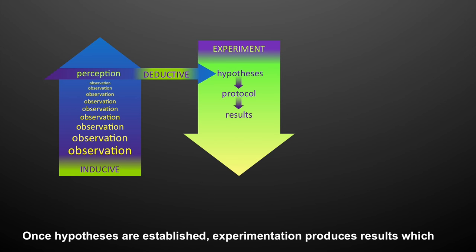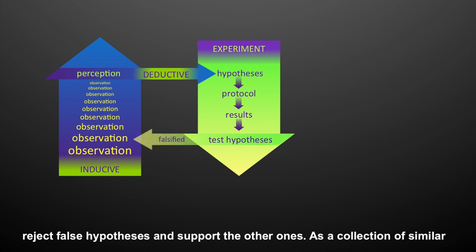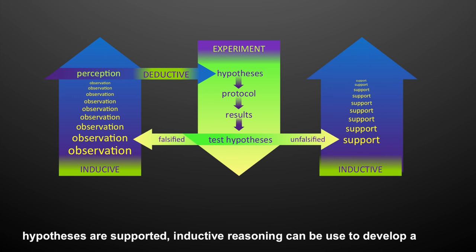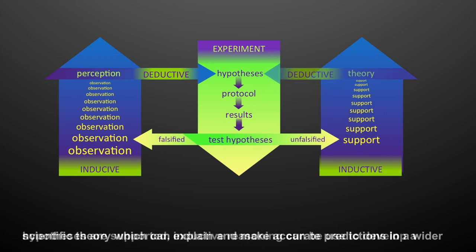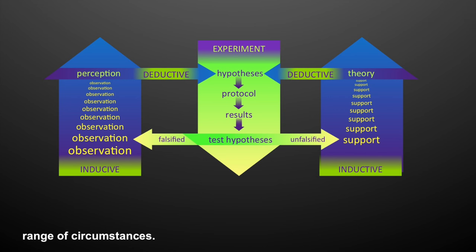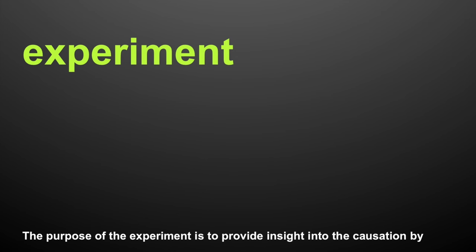Once hypotheses are established, experimentation produces results to reject false hypotheses and support the other ones. As a collection of similar hypotheses are supported, inductive reasoning can be used to develop a scientific theory, which can explain and make accurate predictions in a wider range of circumstances.